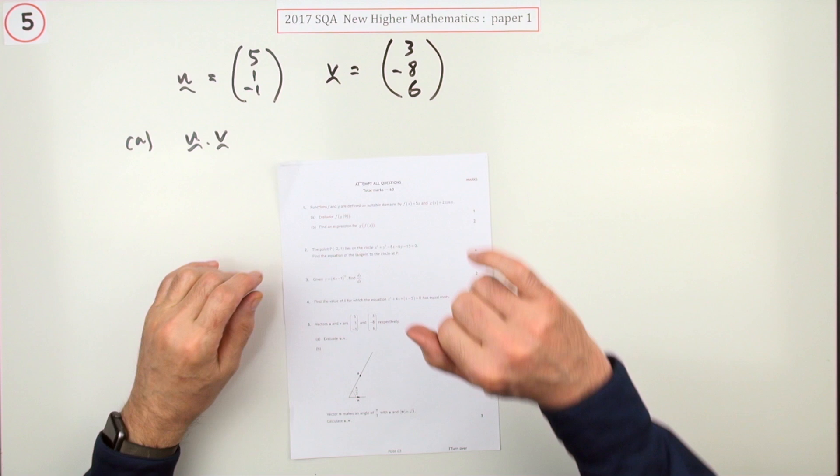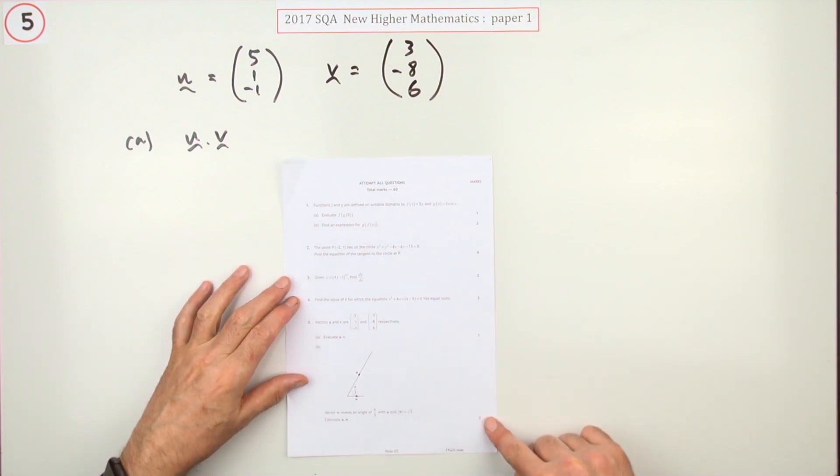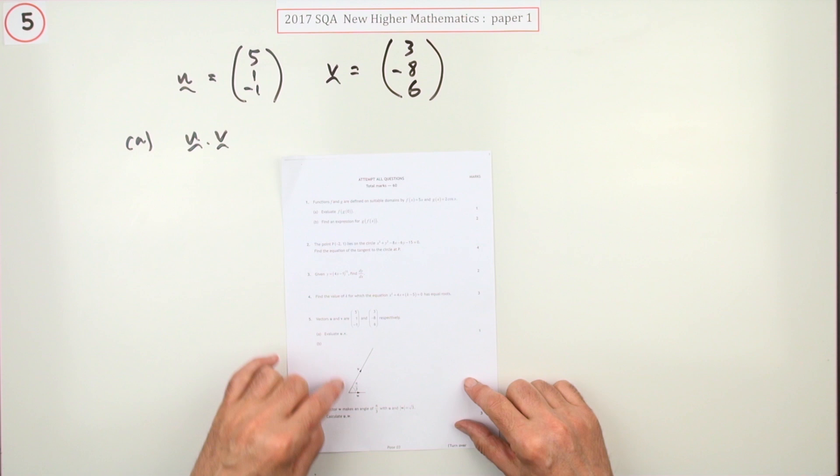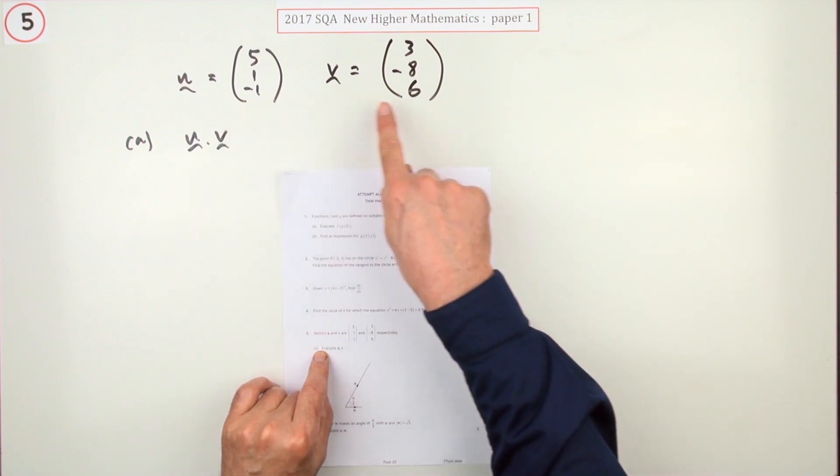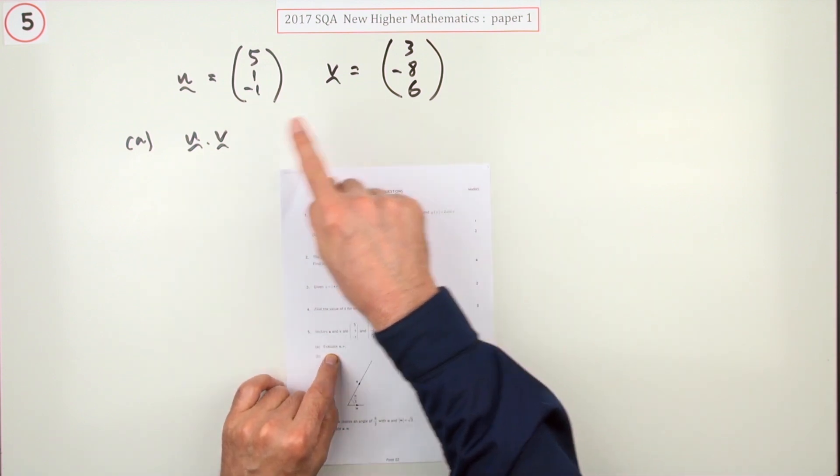Number five from paper one of the 2016 New Higher. Here we go. Format question on vectors. It seems to be about evaluating scalar products. In part A it gives you two vectors in component form and asks what's the scalar product.